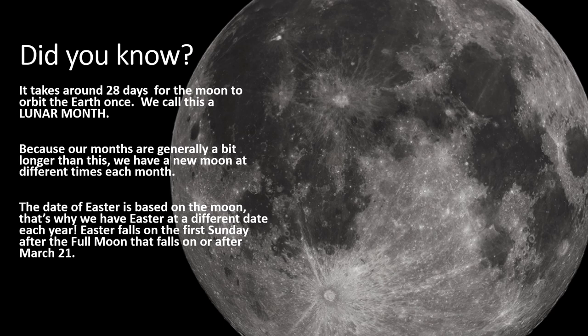Did you know that the date of Easter is also based on the moon? That's why we have a different date for Easter each year. Easter falls on the first Sunday after a full moon on or after March the 21st. For example, Easter is always going to be after March the 21st. So if we had a full moon on the 25th of March or the 4th of April, then it would be the next Sunday after that.